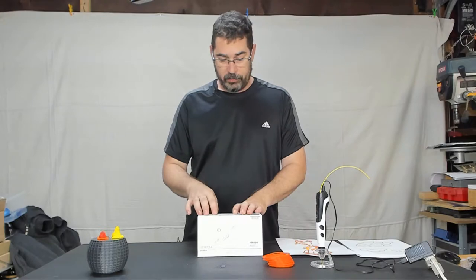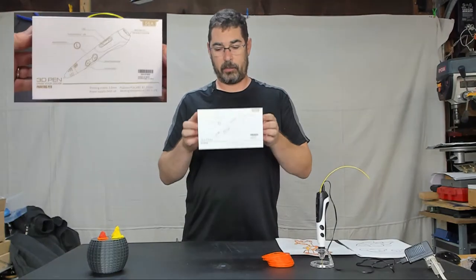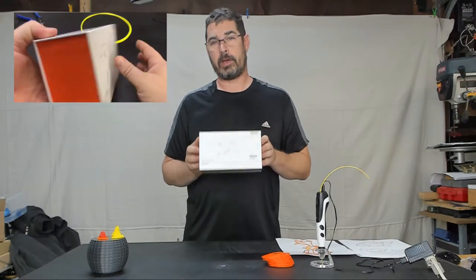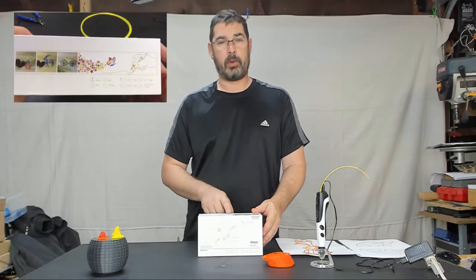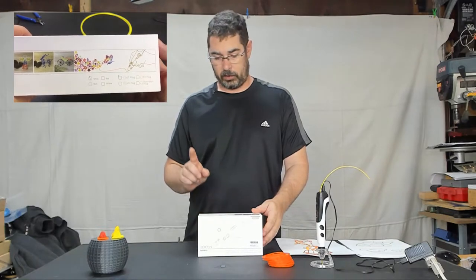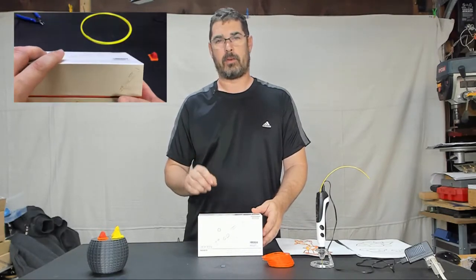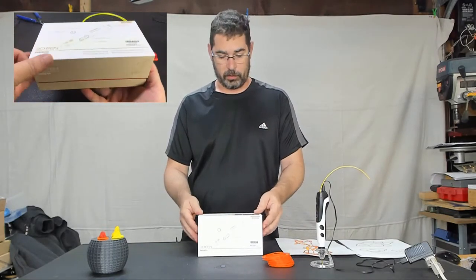So the pen is available in four colors. It comes in white, blue, red and yellow and you don't get to choose your color, it's picked randomly for you. And it also is available with US, UK, Australia and Europe plugs, depending on which Amazon of course that you're purchasing it from.